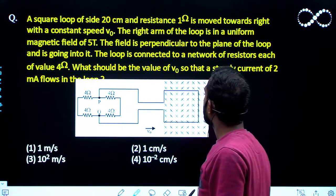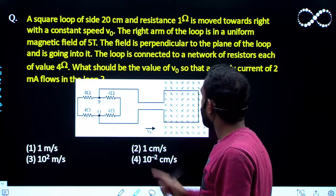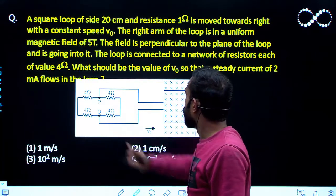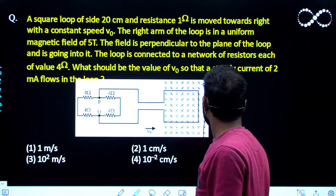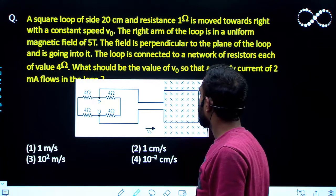V0 is rightward direction. The loop is connected to a network of resistors of value 4 ohm. What should be the value of V0 so that a steady current of 2 mA flows through the loop?